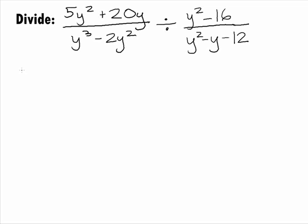In this example, we want to divide 5y squared plus 20y over y cubed minus 2y squared by y squared minus 16 over y squared minus y minus 12.